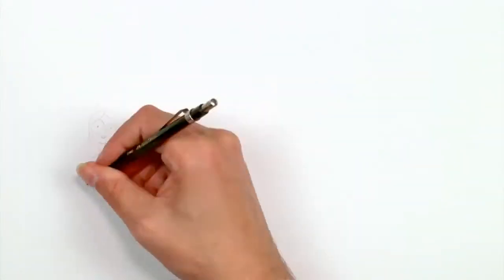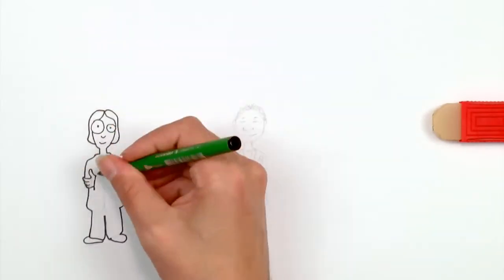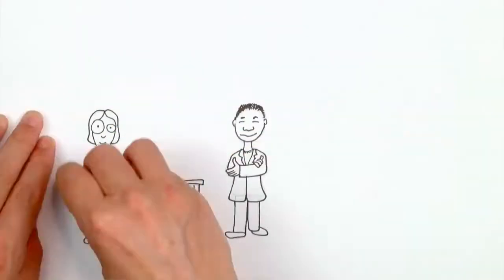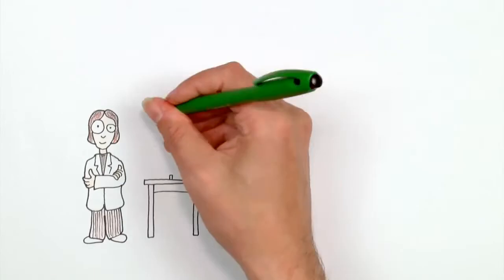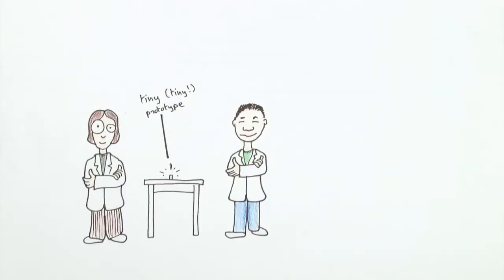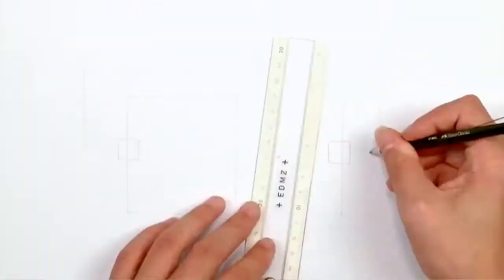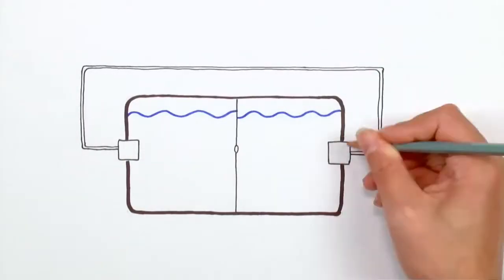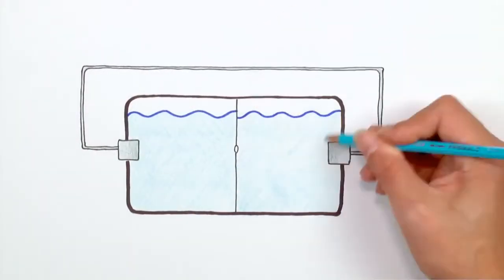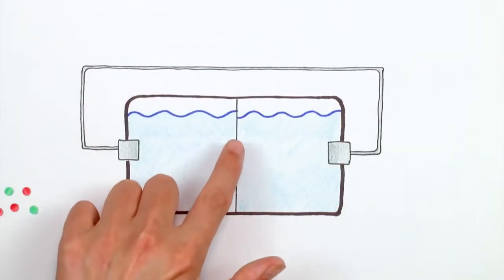This is the phenomenon that EPFL researchers are taking advantage of with their new prototype, which was the subject of an article in the journal Nature. They developed a small device with two liquid-filled compartments separated by a membrane. The membrane has a tiny hole, also known as a nanopore.